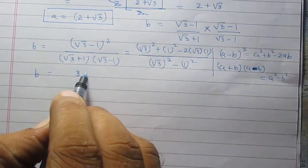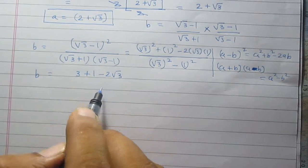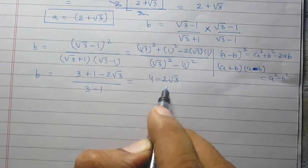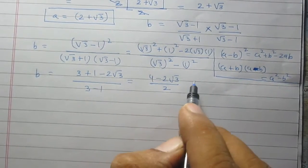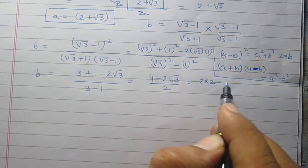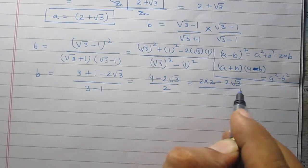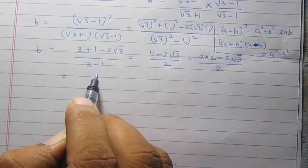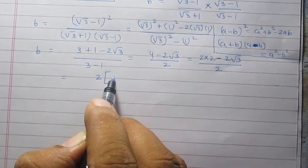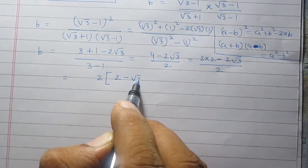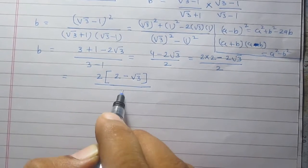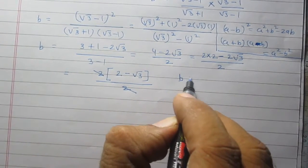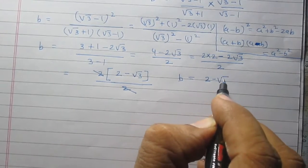So b is equal to 3 plus 1 minus twice of square root of 3, with the denominator being 3 minus 1. That gives us 4 minus twice of square root of 3, divided by 2. Since 4 is twice of 2, we take 2 as a common factor outside the bracket, giving us 2 times the quantity 2 minus square root of 3, divided by 2. The 2 in the numerator cancels with the 2 in the denominator, so the value of b is 2 minus square root of 3.